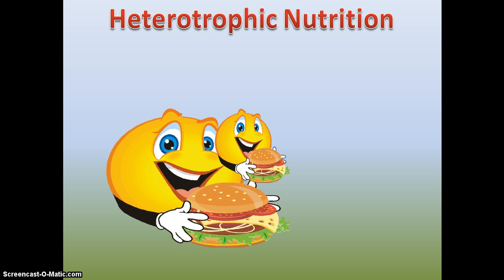Heterotrophic mode of nutrition is that mode in which an organism cannot make or synthesize its own food from simple inorganic materials like carbon dioxide and water, and depends on other organisms for its food. A heterotrophic organism is a consumer which derives its nutrition from other organisms. All animals, most bacteria, and fungi also have a heterotrophic mode of nutrition.